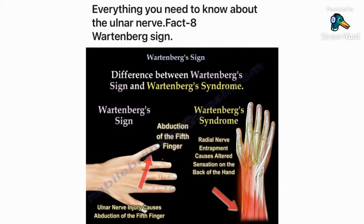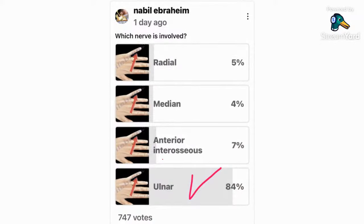Wartenberg's sign is different from Wartenberg's syndrome, which is caused by entrapment of the superficial radial nerve between the brachioradialis and the extensor carpi radialis longus, about 8 centimeters from the joint. Wearing handcuffs, a watch, or a bracelet in that area can create irritation of that nerve.